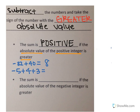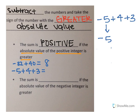In our second example, we have negative 5 plus positive 4 plus positive 3. There are three integers here. Two of them have a positive sign and one is negative. So what I'm going to do is combine my positive integers first. I'm going to bring that negative 5 down — I haven't done anything with it yet — and I know that positive 4 plus positive 3 is going to be positive 7.